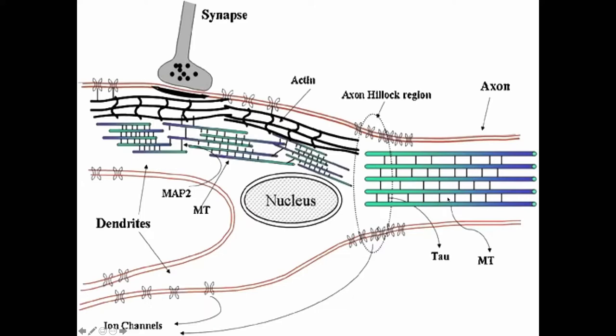In the axon and all other non-neuronal cells, microtubules are continuous and unbroken, going from the cell center to the periphery. So it's curious why microtubules in dendrites are interrupted and of mixed polarity. Obviously as part of the cytoskeleton, you wouldn't break your bones for skeletal support, so there has to be some other reason.